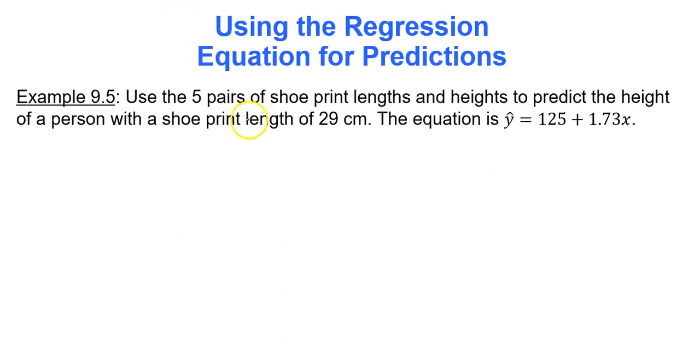Let's look at the five pairs of shoe print lengths and heights to predict the height of a person with a shoe print length of 29 centimeters. So x equals 29. Now don't go into robot mode and immediately start plugging in 29 for x into the regression equation. You need to wait. Is there linear correlation based on the hypothesis test? In the previous video, we actually ran the hypothesis test for the shoe print lengths, and we discovered and concluded that there was no linear correlation.